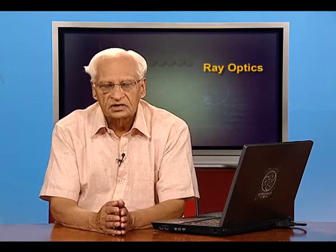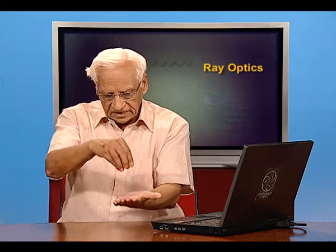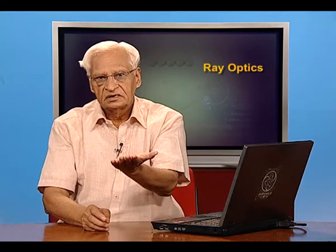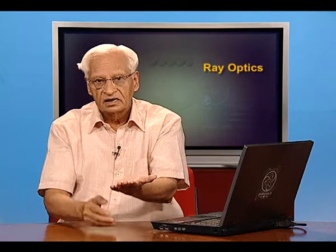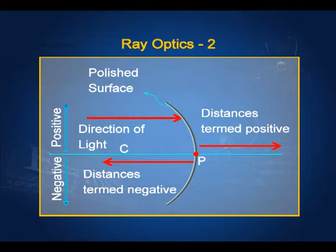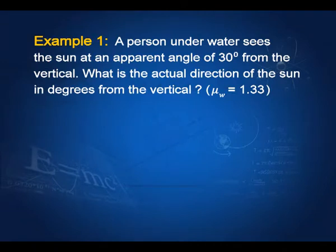Towards the end of the last lecture, we found that if an object is placed under water, its apparent depth — the depth at which we see it from outside — is smaller than its actual depth. Now let us start with one of the examples. A person under water sees the sun at an apparent angle of 30 degrees from the vertical. What is the actual direction of the sun in degrees from the vertical?